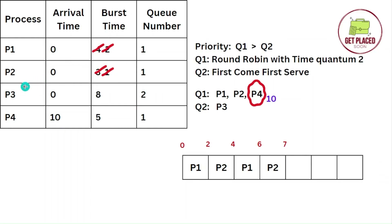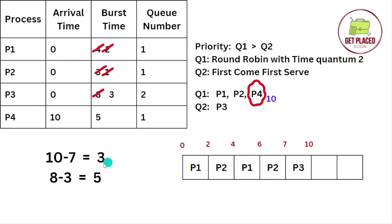We are left with P3 and P4. The current time is 7, and P4 will only be available at time 10. Since Q1 is empty, we can go to Q2 and execute P3. P3 has a burst time of 8 units. From time 7 to 10, P3 executes for 3 units, leaving 8 minus 3 equals 5 units of burst time remaining.